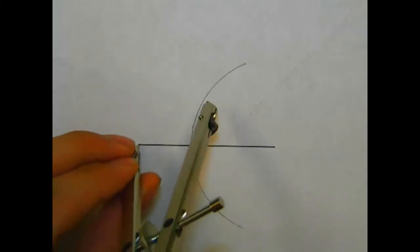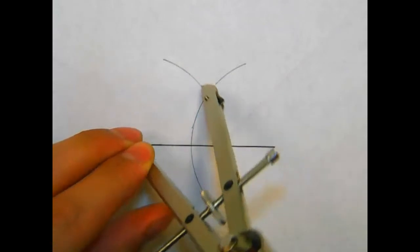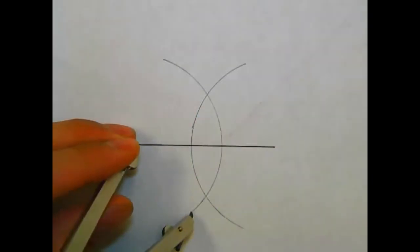Then we will go to the other end of the line and do the same thing. We'll draw an arc from one side to the other.